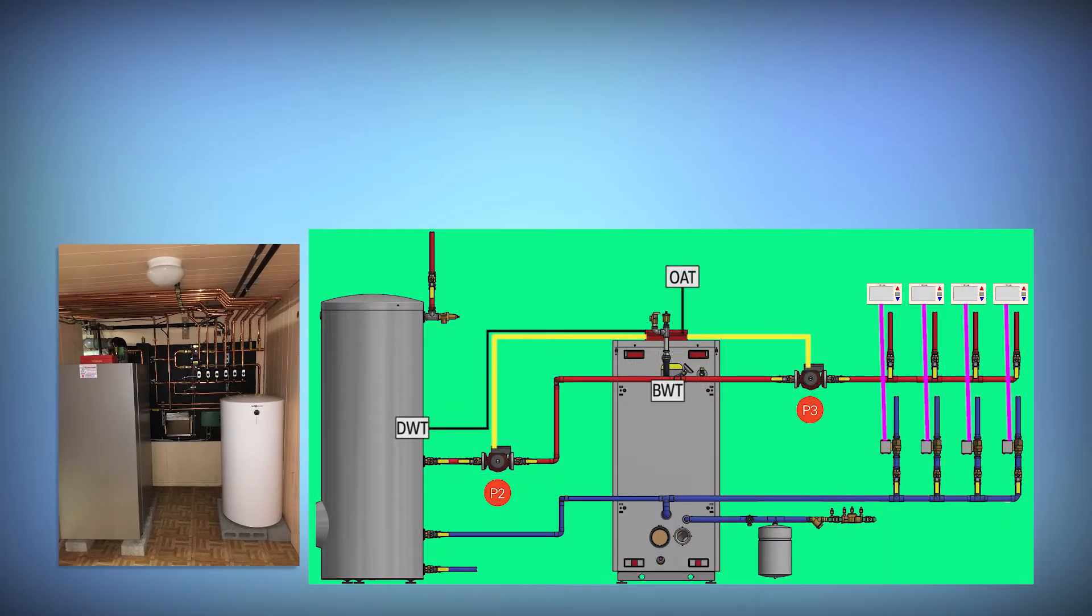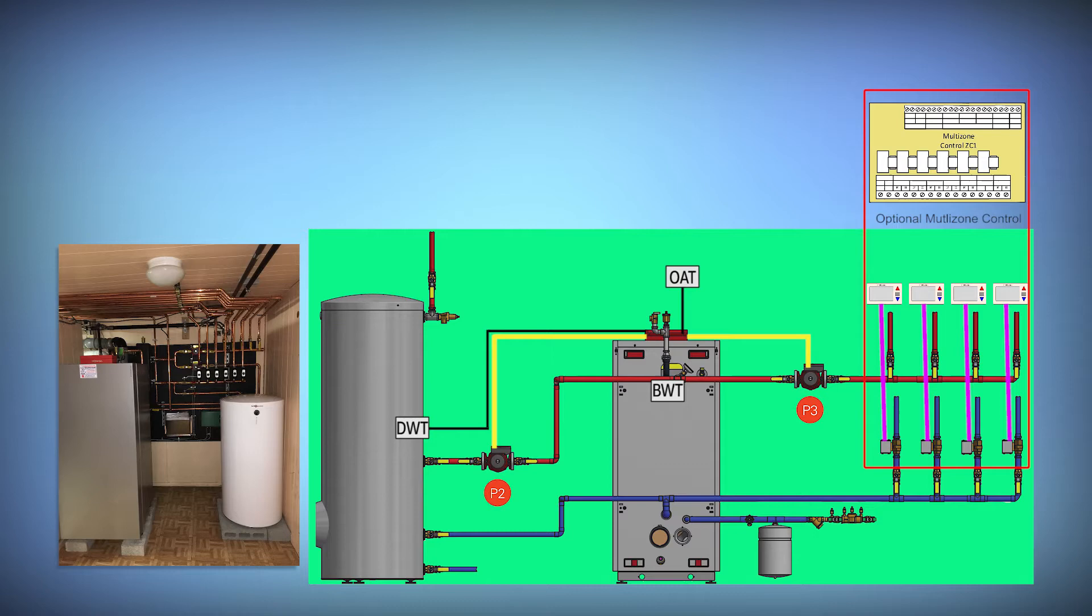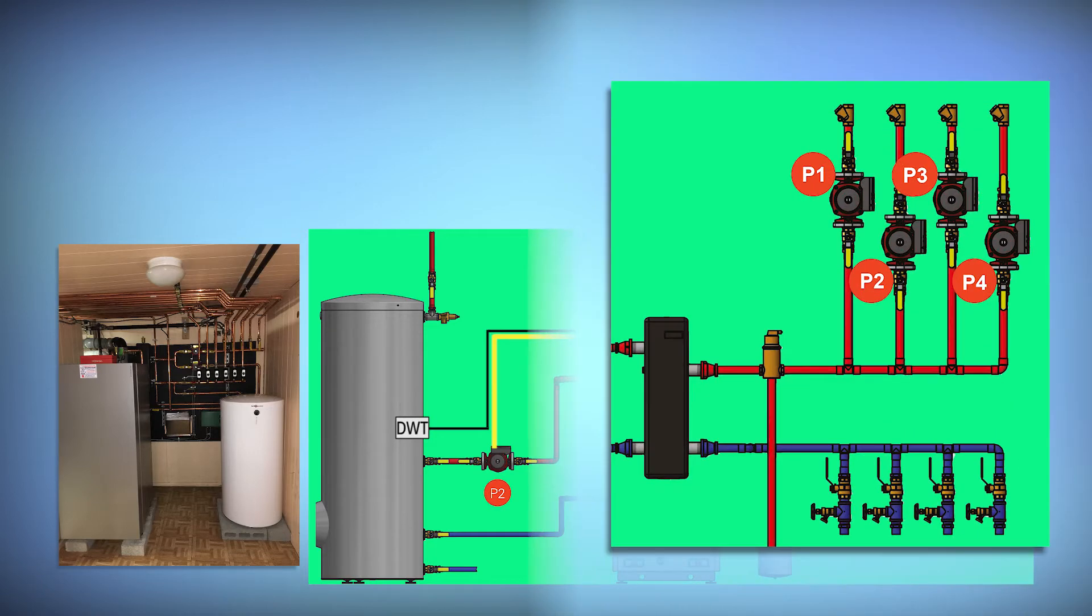Let's look at a simple system with four zones with zone valves. Each zone has a thermostat connected to it directly. This could easily be done with a multi-zone control if that was a better option for the contractor. Instead of one system pump and multiple valves this could just as easily be multiple pumps.